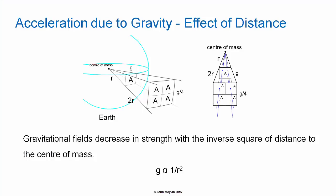Acceleration due to gravity and the effect of distance: in the lecture on gravitational fields we learned that the force due to gravity and acceleration due to gravity decrease with the inverse of the distance from the centre of mass of the object exerting the gravitational field in meters squared. So g is proportional to 1/r², where r is the distance from the centre of mass in meters.